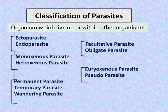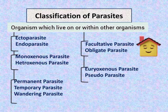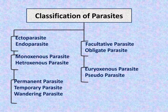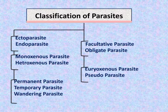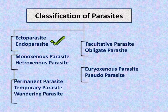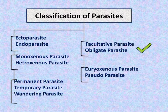A parasite is an organism which lives on or within other organisms, getting shelter, nutrition, and other biological requirements from a host. The classification of parasites includes ectoparasites and endoparasites, facultative and obligate parasites, monoxenous and heteroxenous parasites.